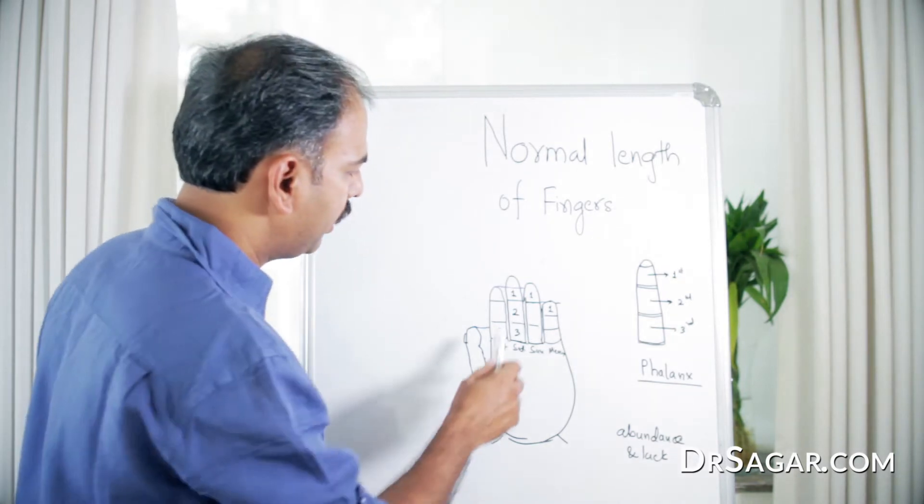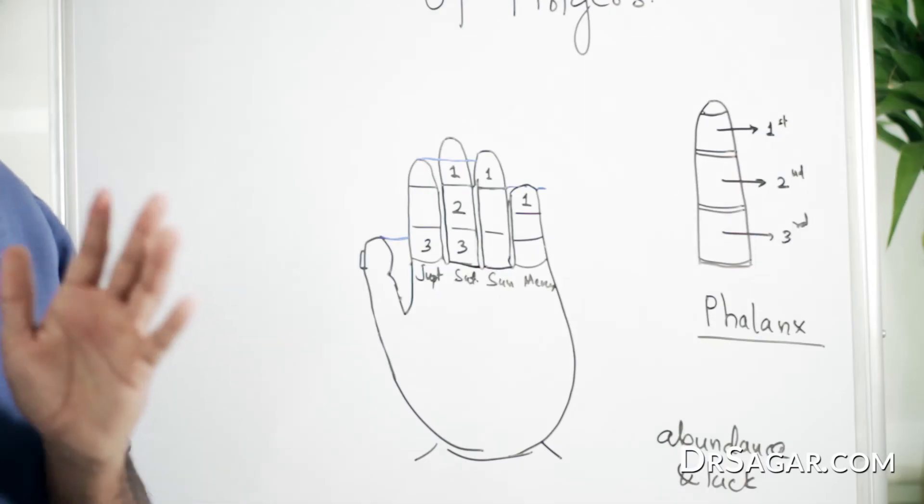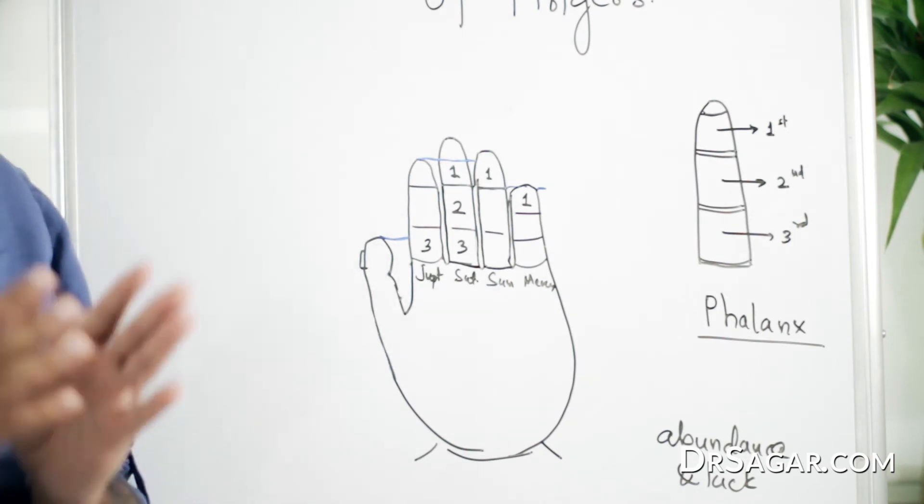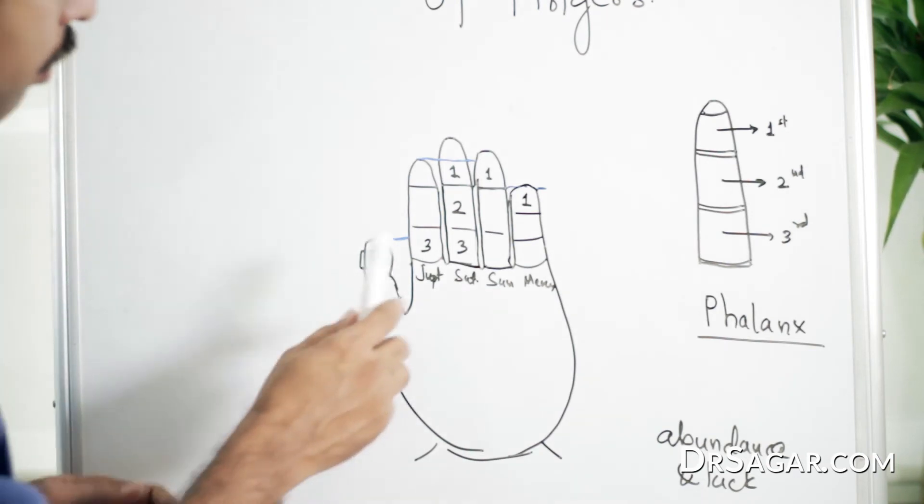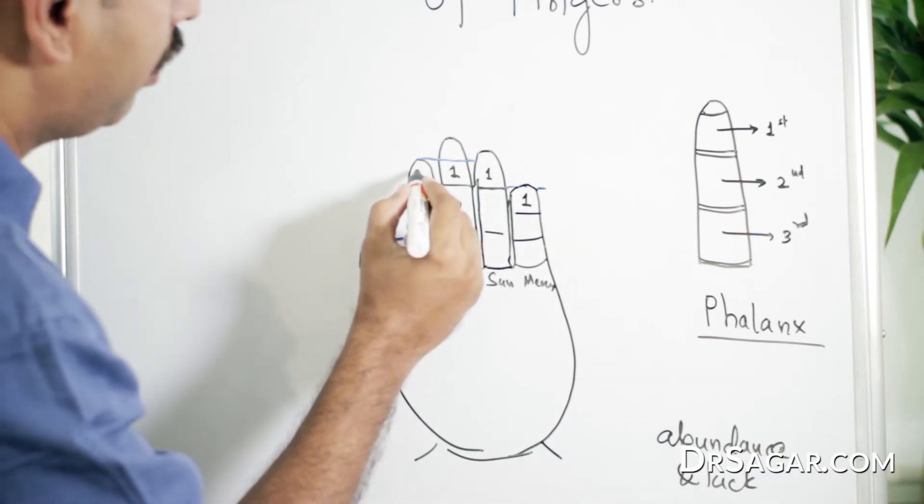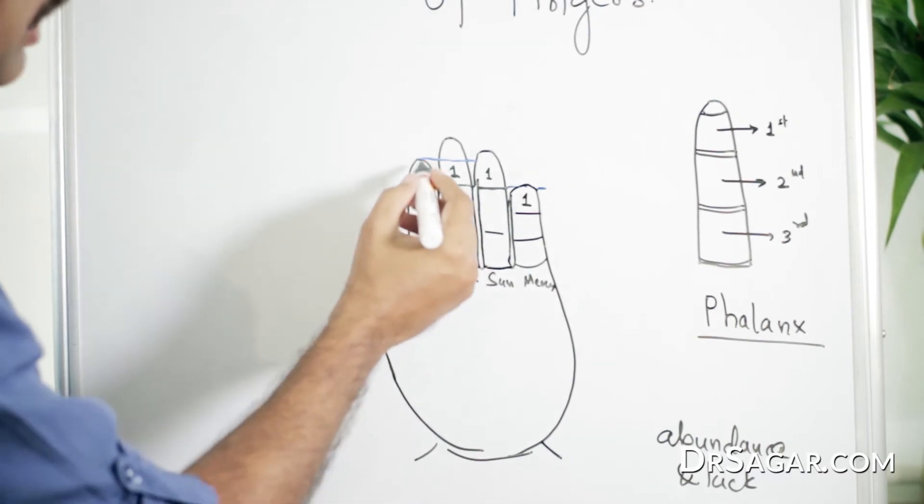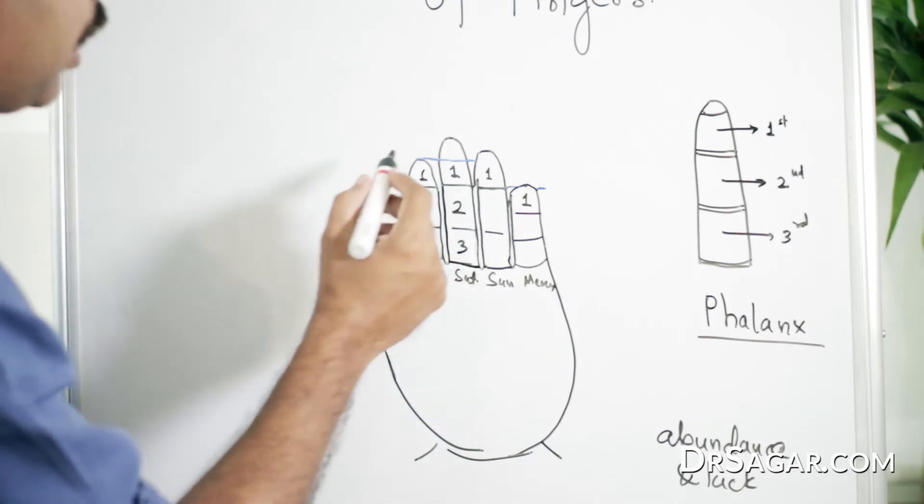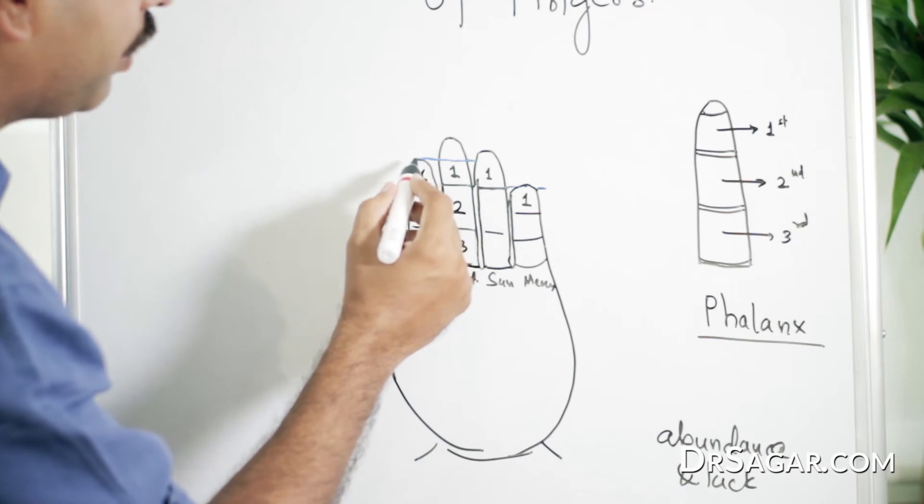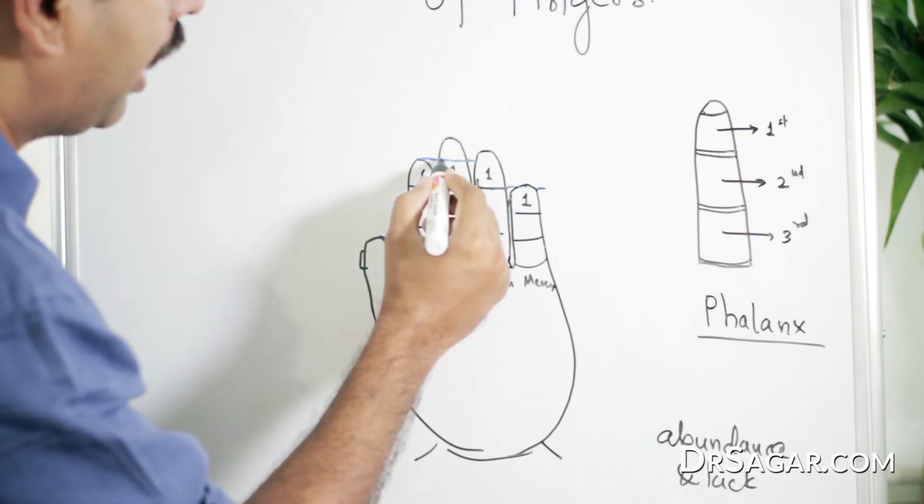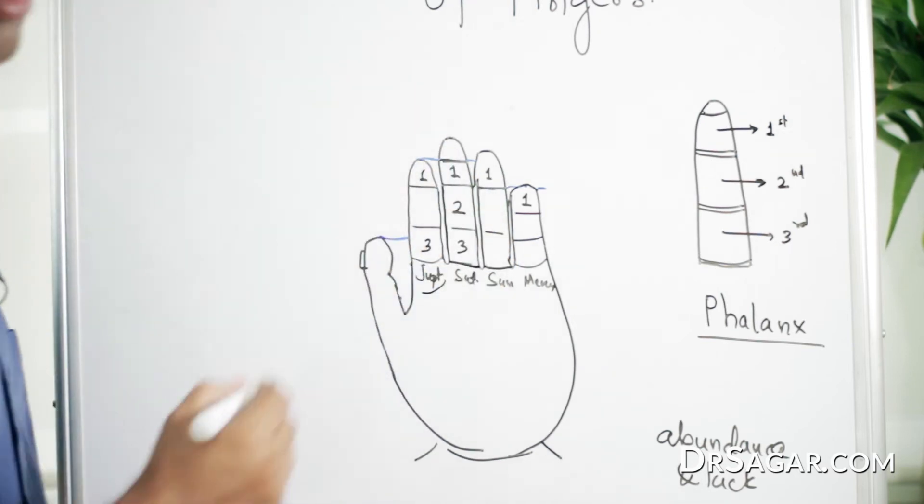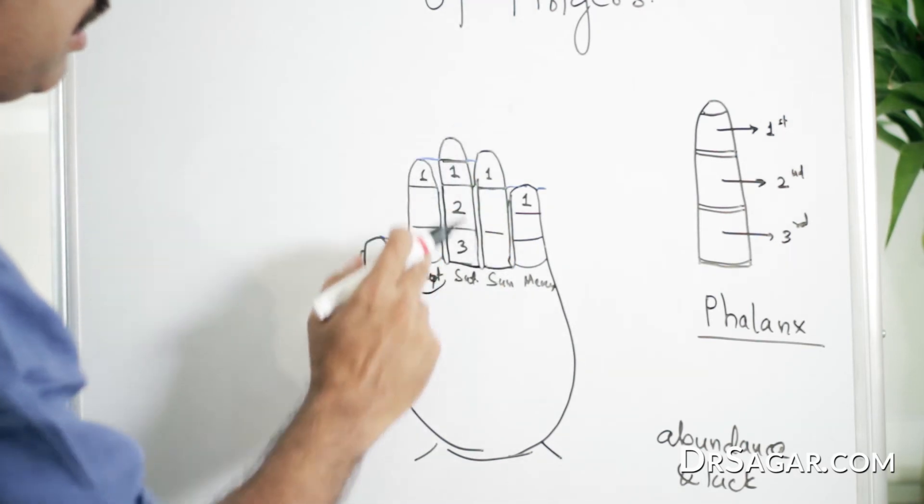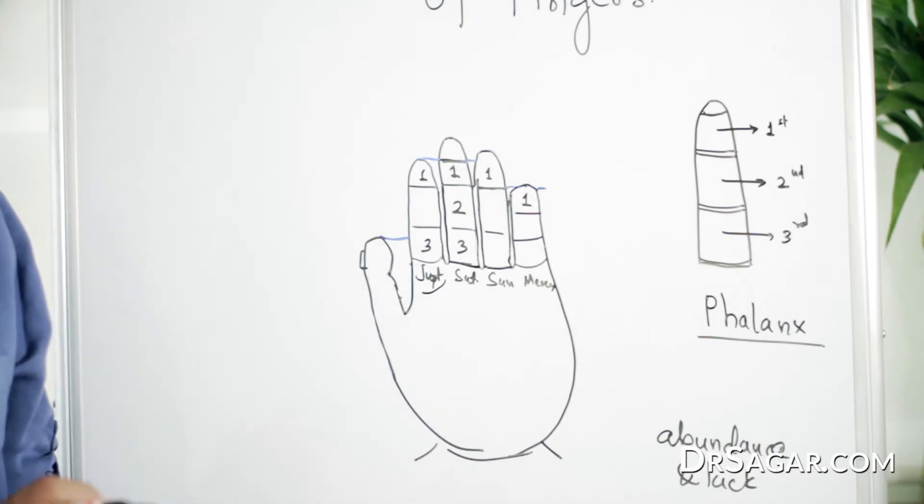First of all, the ring finger is the main finger through which we'll know the length of fingers in normal condition. The tip of the first finger, this is the first finger above the mount of Jupiter, should reach the middle line of the ring finger. This is the normal scale for the first finger.